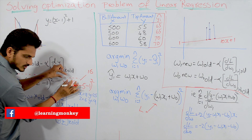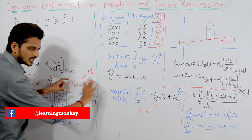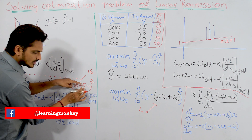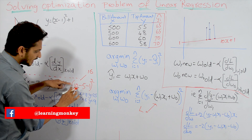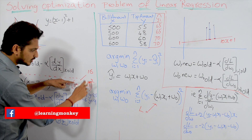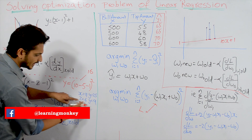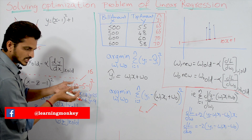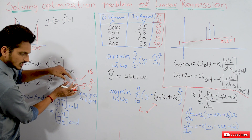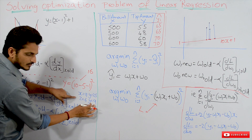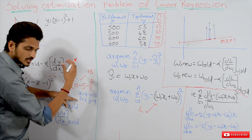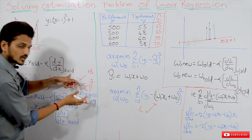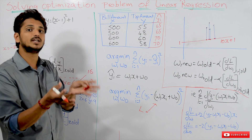Now keep x constant at 10 and increase z from 5 to 6. Computing: (10 minus 6 minus 1) whole square gives y equals 9. When we increase the z value while keeping x constant, y reduces — y is decreasing. This is the concept of partial differentiation. We use partial differentiation when we have more than one variable in our function.